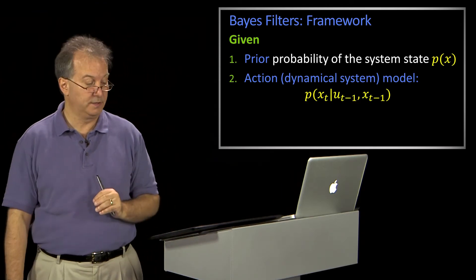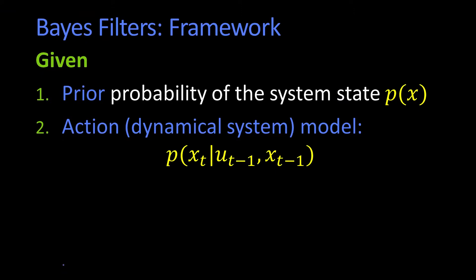But again, maybe with a large uncertainty. So here we have our dynamical system model. And so it's the probability of some new x, given my belief about the previous x plus this input.